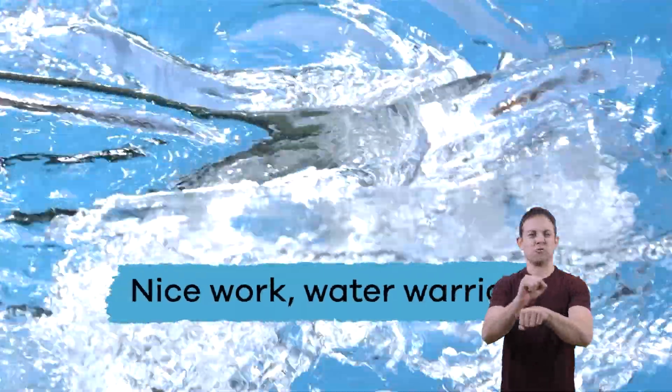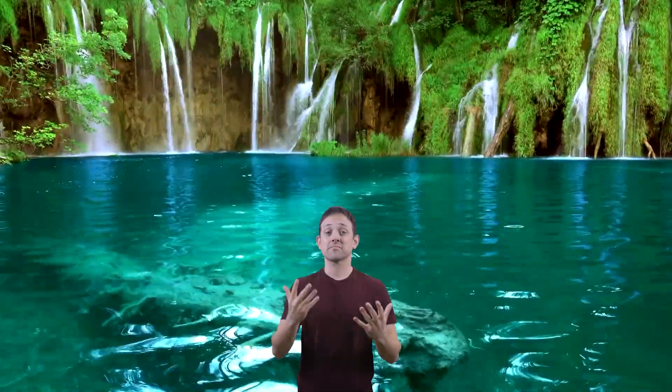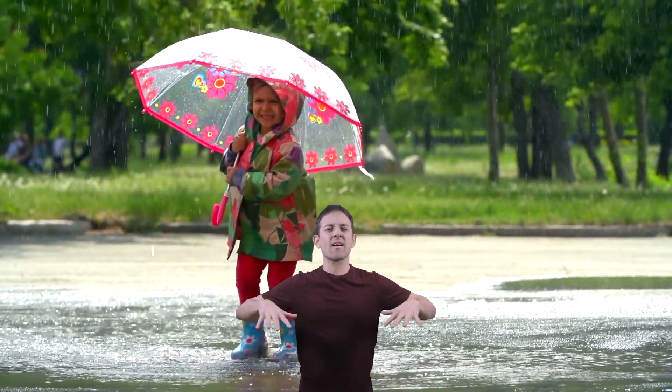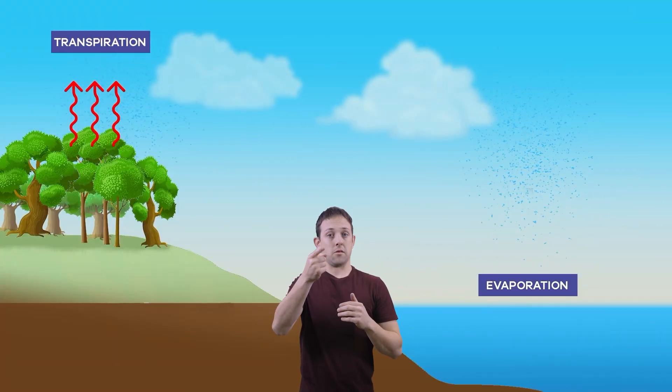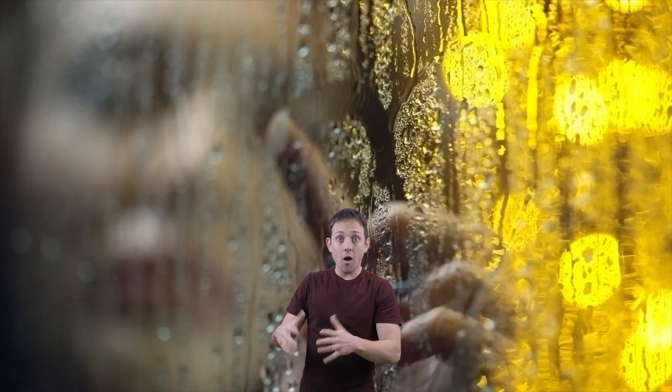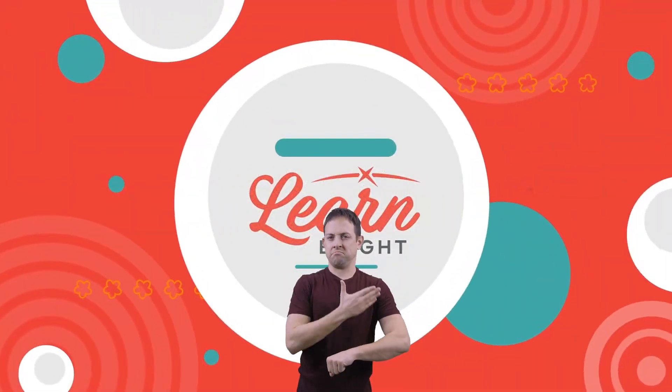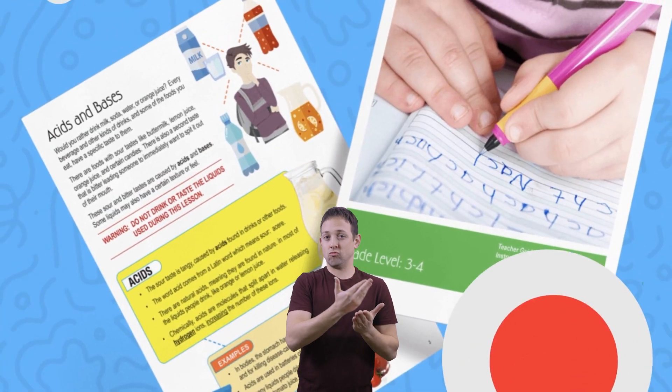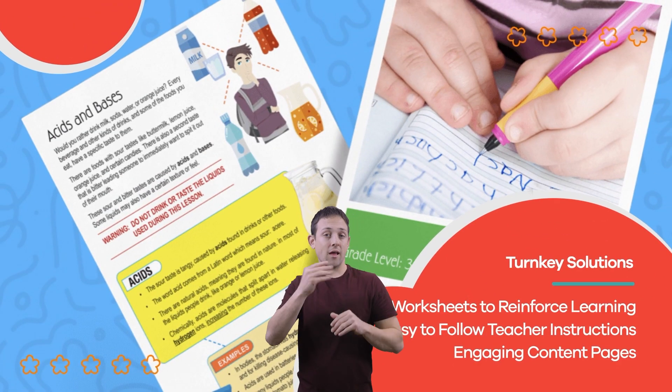Nice work, water warriors. Whether you see it in the ground or feel it in the air, water is everywhere. And now that you know about the importance of the water cycle, you can see the stages happening all around you. The next time it rains or the next time you see a foggy window or mirror, you can remember everything you learned about the water cycle. Hope you had fun learning with us, visit us at learnbright.org for thousands of free resources and turnkey solutions for teachers and homeschoolers.